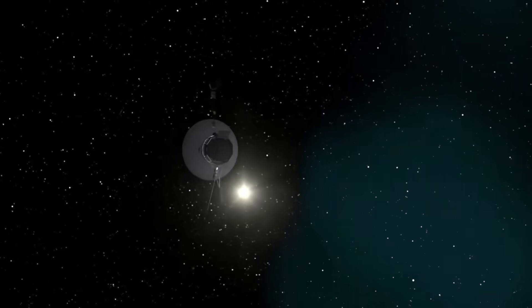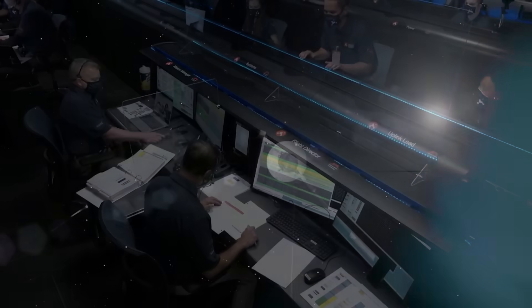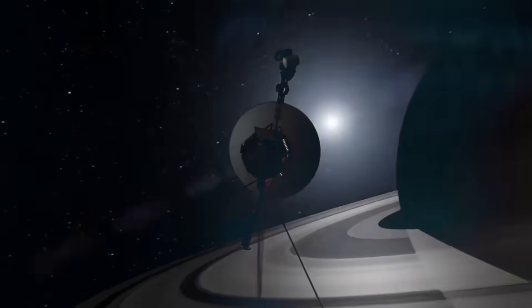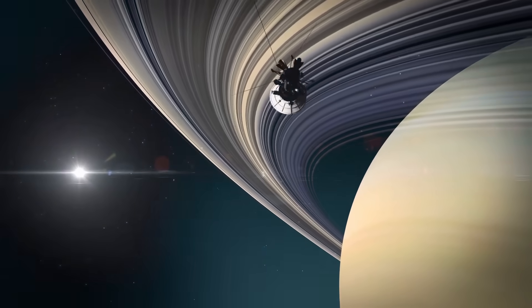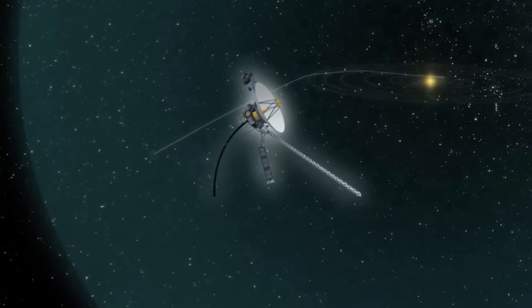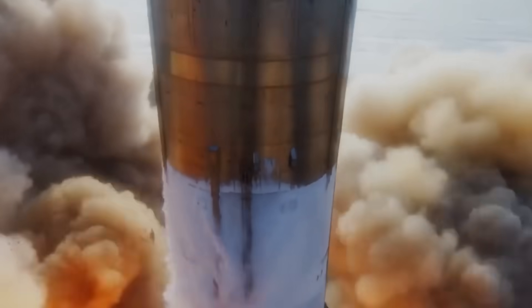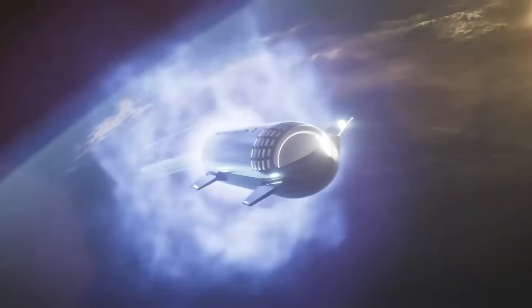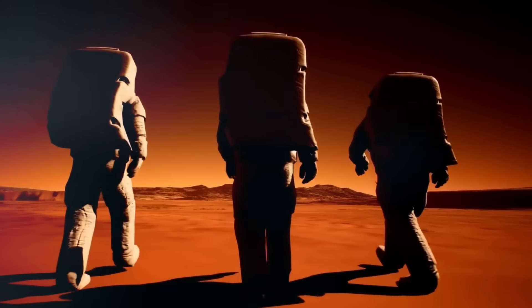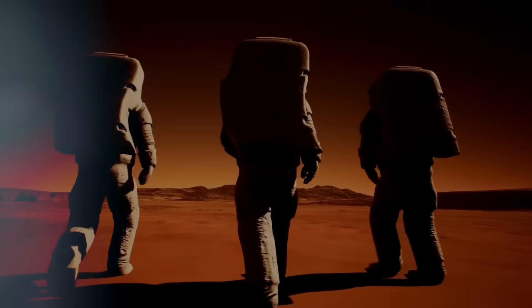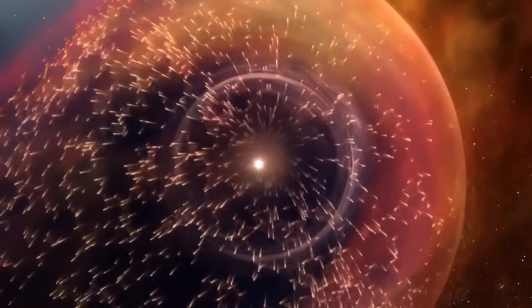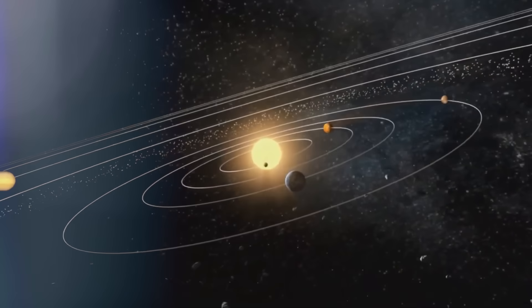For 45 years, Voyager 1 was our silent ambassador to the stars, an aging, drifting fragment of human will, wrapped in gold and binary. It carried our sounds, our greetings, and our hope that something out there might one day listen. But we never expected an answer. Not like this. Because Voyager hasn't just reached the edge of space. It has pierced something older, stranger, and far more intentional than anyone imagined. A region where time twists, physics trembles, and signals reflect. A place that does not behave like the rest of the cosmos, a place that watches back.